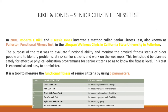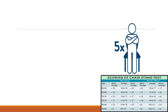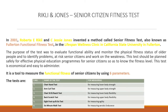The 6 tests are: 1. Chair Stand Test - for measuring Lower Body Strength, 2. Arm Curl Test - for measuring Upper Body Strength, 3. Chair Sit & Reach Test - for measuring Lower Body Flexibility, 4. Back Scratch Test - for measuring Upper Body Flexibility, 5. 8 Foot Up & Go Test - for measuring Agility, 6. 6 Minute Walk Test - for measuring Aerobic Endurance.